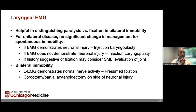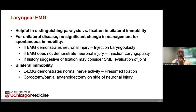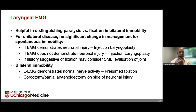EMG can help determine paralysis versus fixation and is very helpful in bilateral immobility — for example, to determine if there's fixation on one side and immobility on the other, guiding which side to perform chordotomy or partial arytenoidectomy on. In my practice, I don't use it for all patients, but some use it to give patients a sense of the timeline for return of function. For unilateral disease, it doesn't always change management, since you'd still do an injection laryngoplasty regardless of EMG findings.